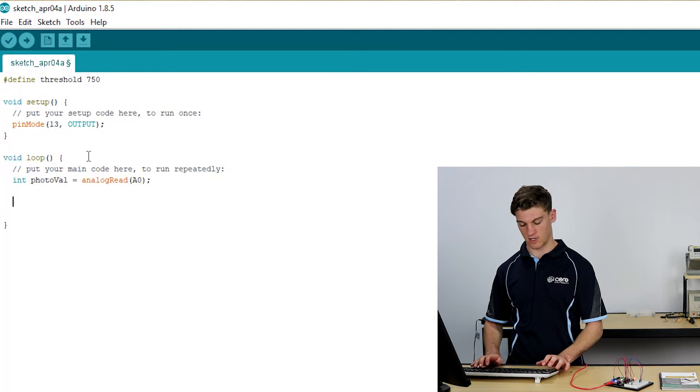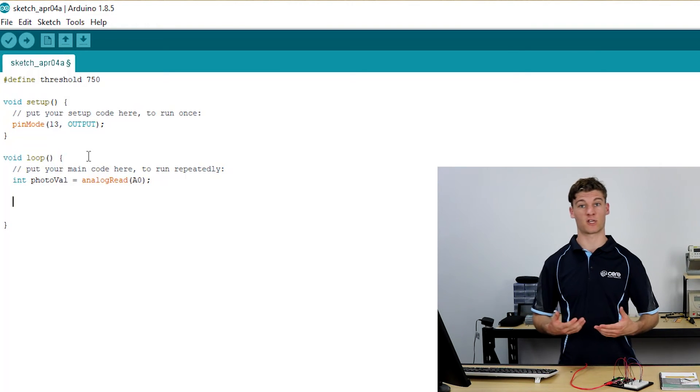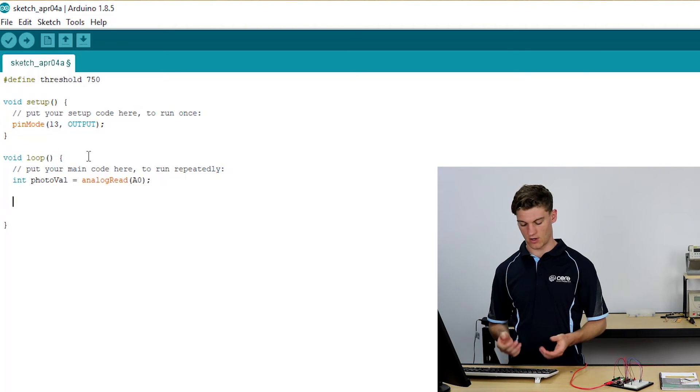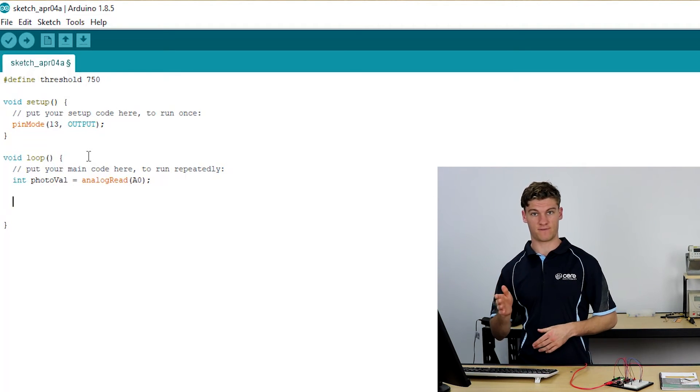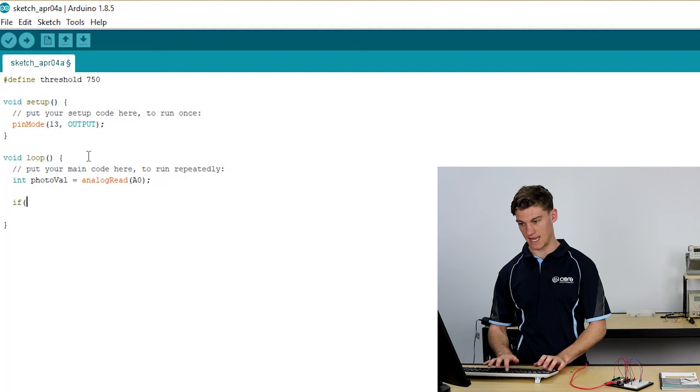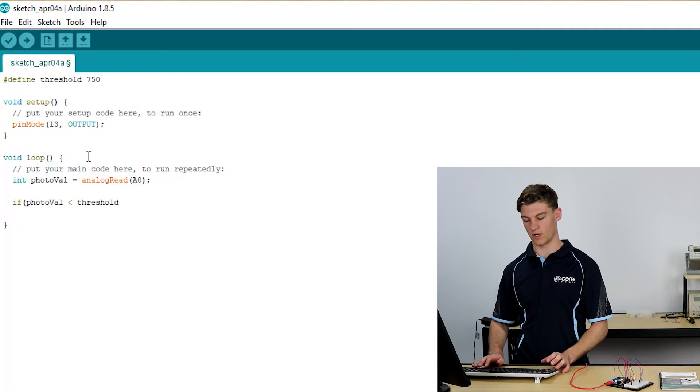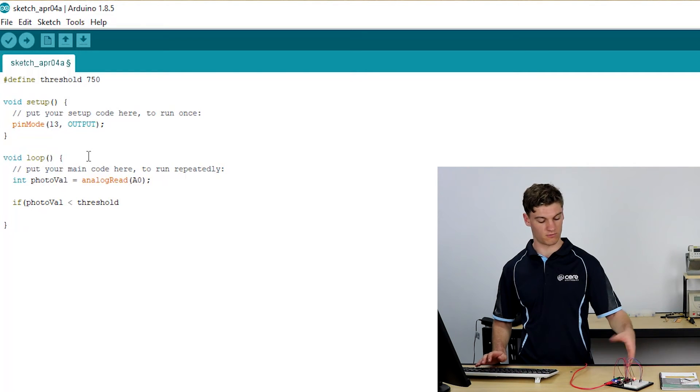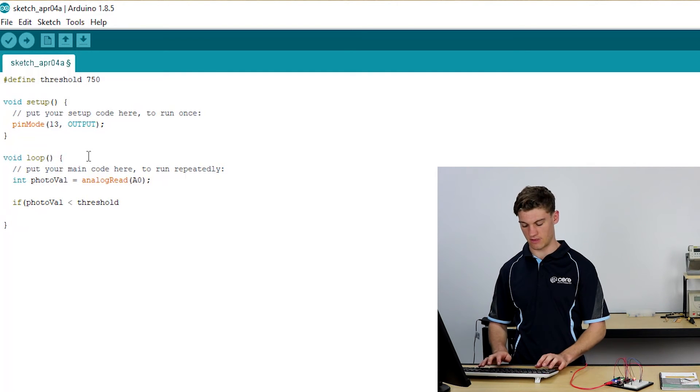Then what we're going to do is we're going to use our first if or conditional statement. So an if statement means if this then that. We're going to say if photoval is less than threshold. So we use the less than symbol to say less than. If we wanted less than or equals we'd say less than or equals. If the photo value, the read in value, is less than the threshold.